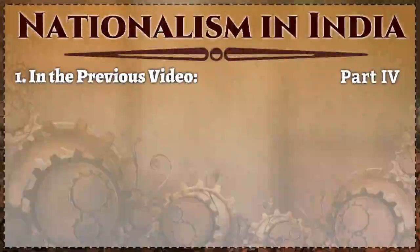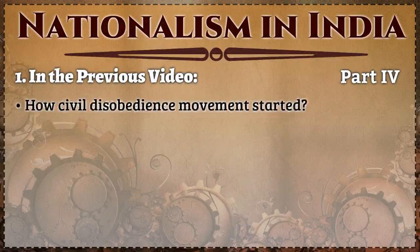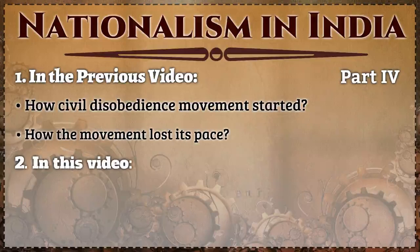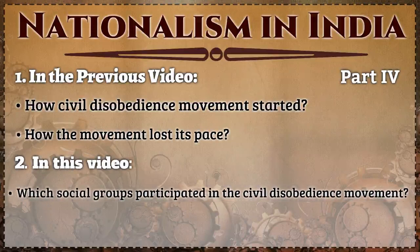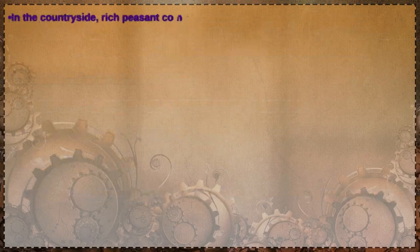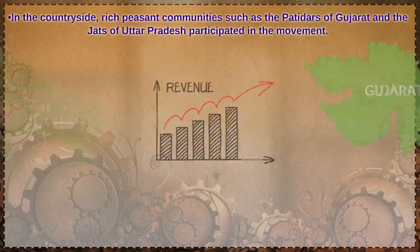In the previous video we talked about how the civil disobedience movement started in India by Mahatma Gandhi and how the movement lost its pace. In this video we will talk about which social groups participated in the civil disobedience movement and with what motive, and how political thinkers tried to forge a sense of collective belonging among Indians.